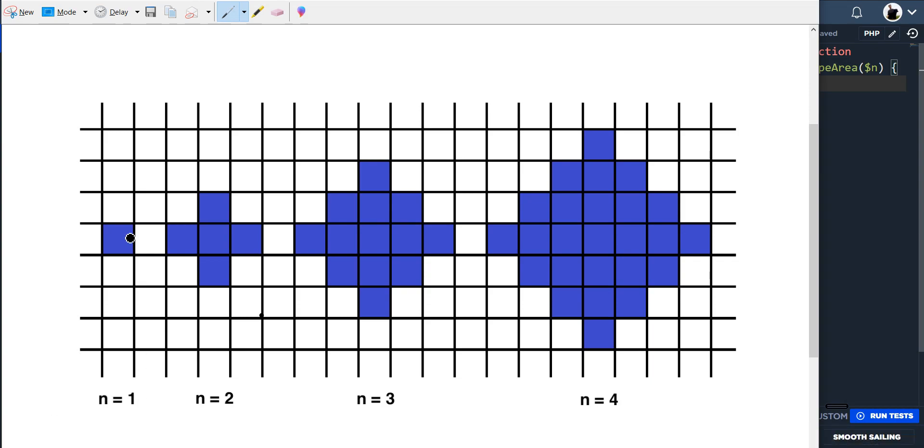We've got n equals 1 here, so we're just counting that one square and we've got 1. So our area is 1. It can be very difficult at the beginning of the sequence to see the pattern, but as we move on to n equals 4 it will be a lot more clear.